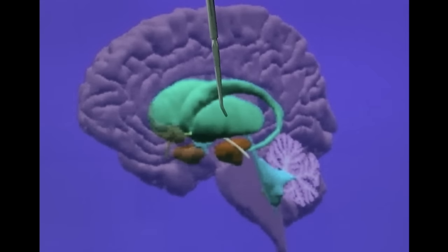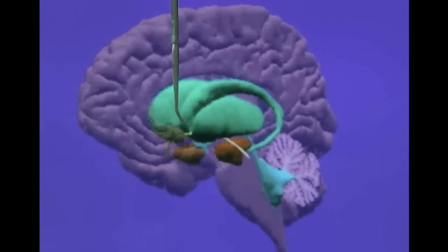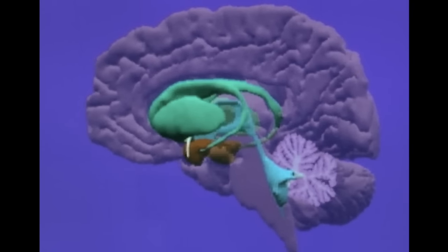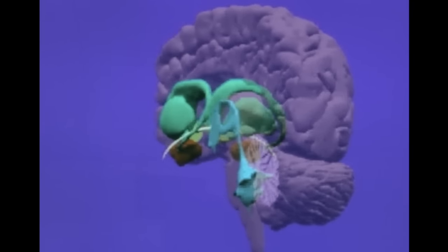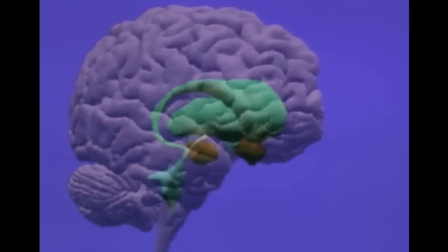This second animation adds the structure called the putamen. The putamen is large and green, and this space here represents where the rainbow internal capsule is located, with the caudate alongside it. The putamen and the caudate together are called the striatum. As we rotate, you can see the tail of the caudate coming around and the putamen. The red structure here is the amygdala.